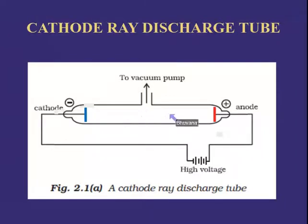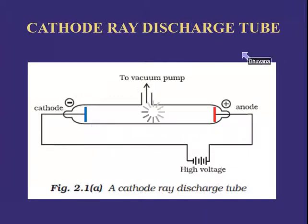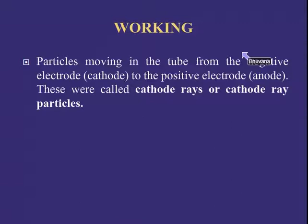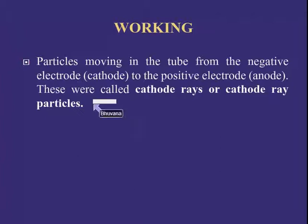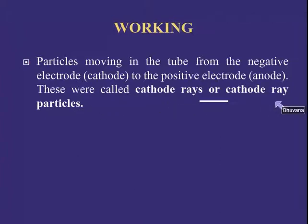Whatever is happening inside this glass tube, we can't observe directly. The particles moving in the tube travel from the negative electrode to the positive electrode — these are called cathode rays or cathode ray particles.